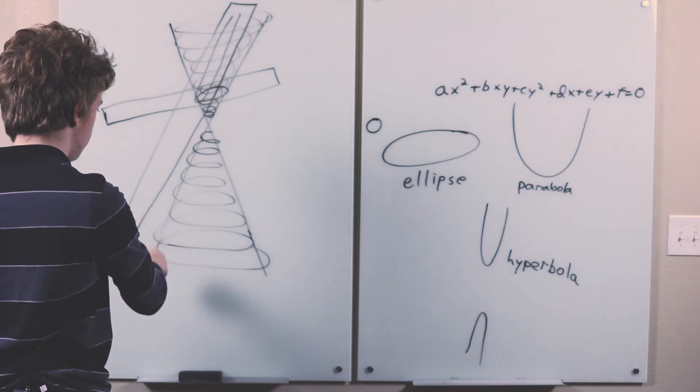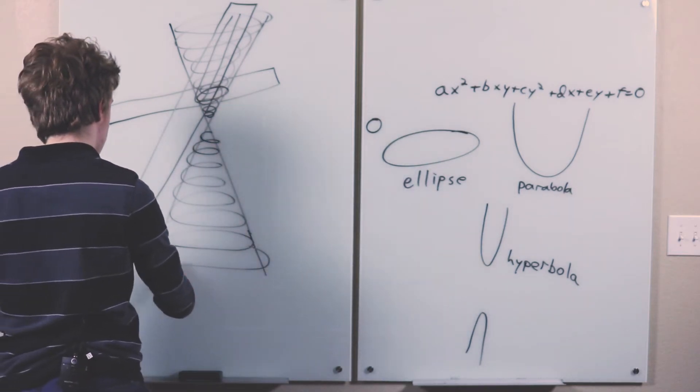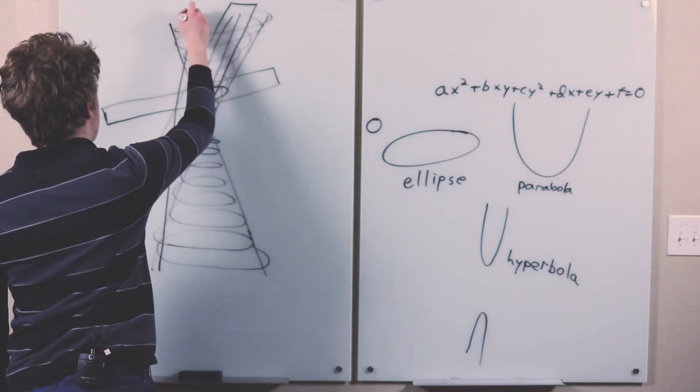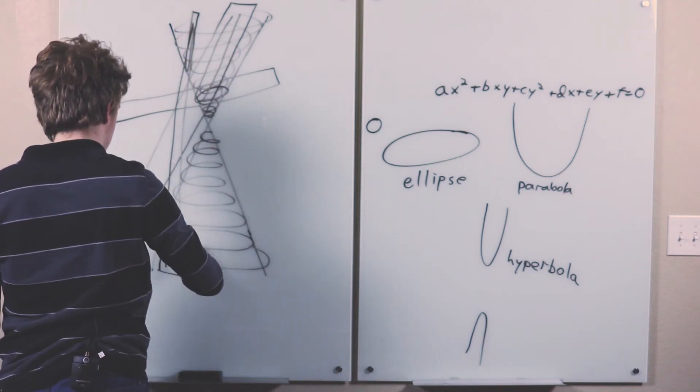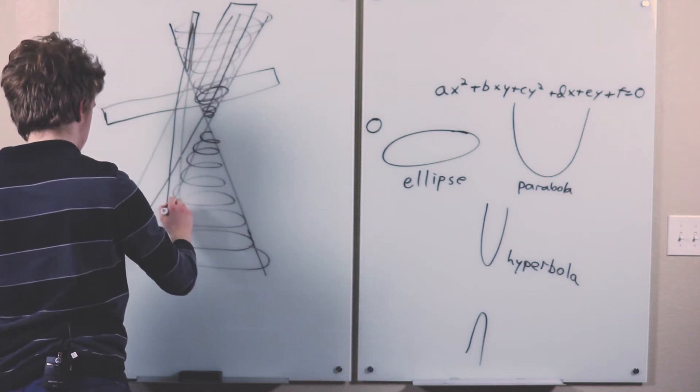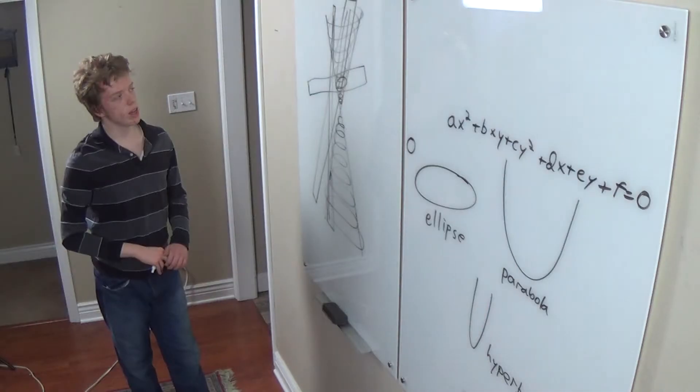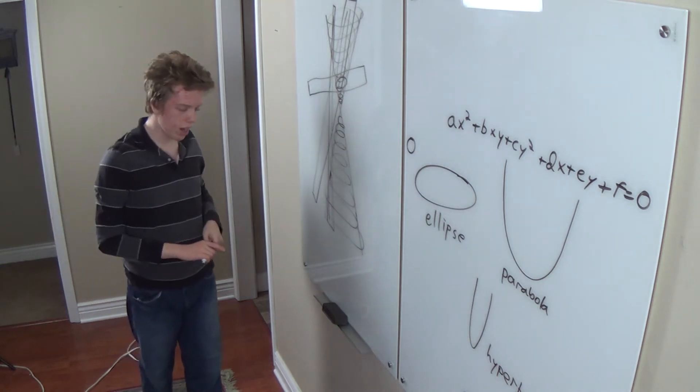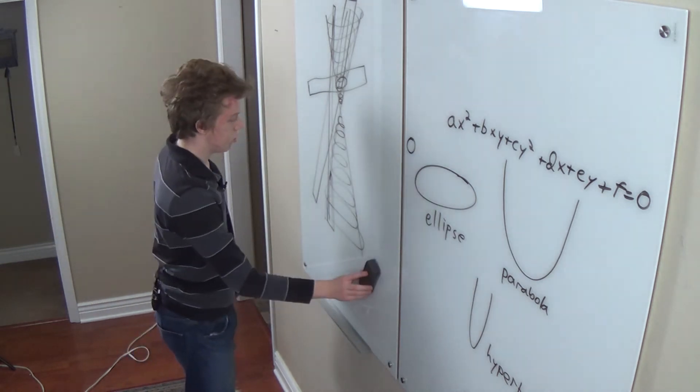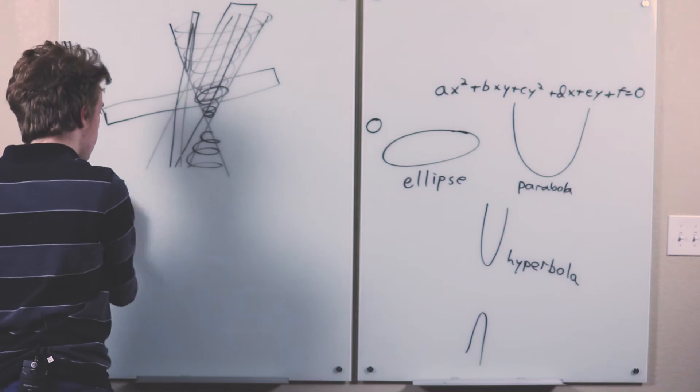Or if you tilt it more so that it will hit the bottom cone, you can get a hyperbola. And then there's a third way of looking at it, which will be the most useful way for our purposes, right at the present.